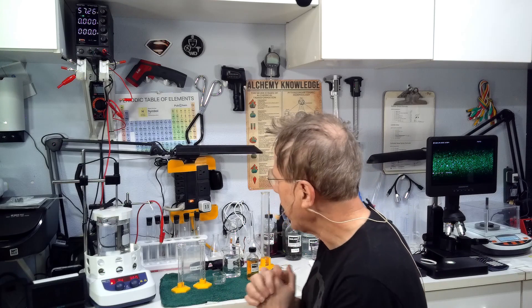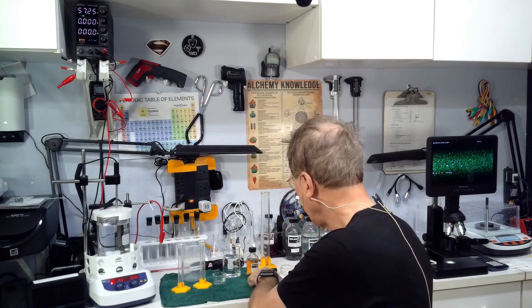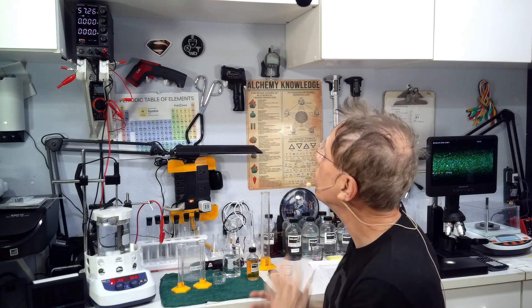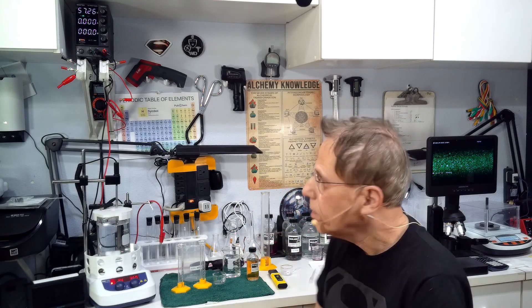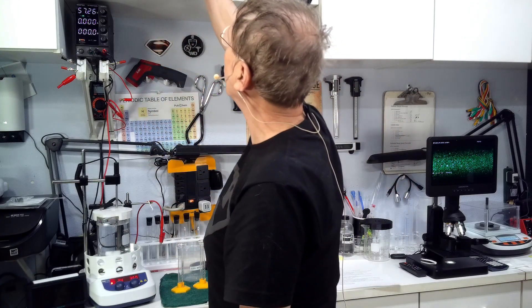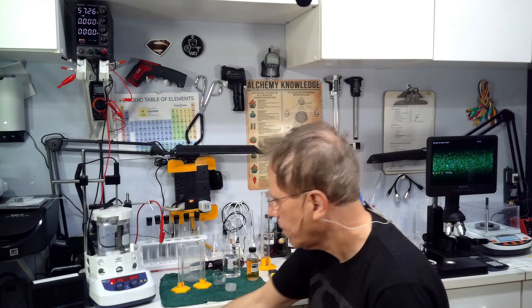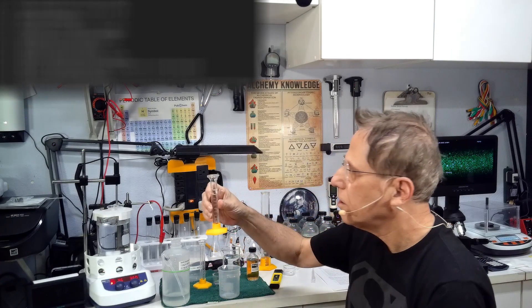We will need 1.5 amps or 1500 milliamps to cook this solution. You've got to put the chemicals in and make sure you got your pH meter handy too.